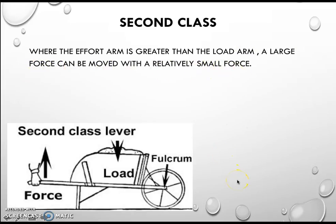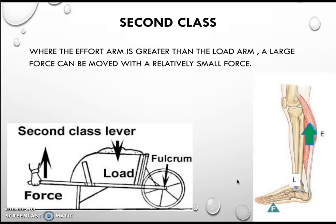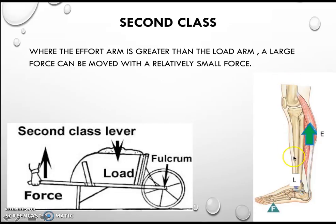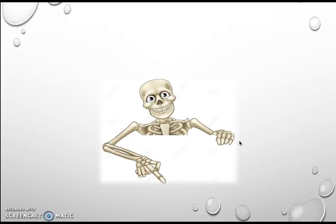Let's think of the second class example we use within our bodies. There's the fulcrum, there's the load, and there's the effort. With a relatively low amount of force from this muscle, we can actually lift our entire body weight. It's quite clever — that's because of the efficient use of levers in relation to a second class lever. Pause if you need to draw some diagrams, but now we'll move on to the third class lever.